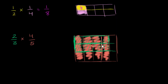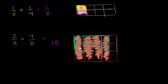But what fraction of the whole does that represent? How many total equal sections do we now have? We have 15 equal sections — that makes sense, because we started with five equal sections and divided each into three, so we have 5 times 3 total equal sections. And how many of those are in the 2 thirds of the 4 fifths? There are 8 of them — 8 of the 15 equal sections.